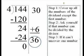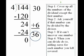Step 3, if it can't, like in this problem, we then have to uncover one of the 4s and use 14. Step 4, when you can divide, do so, adding zeros for each number you left covered. In this case, we left the last 4 covered.